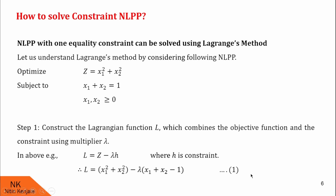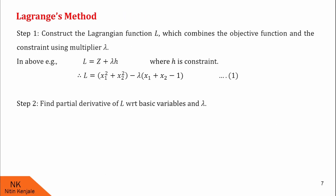Now we proceed to step 2. In step 2, we find the partial derivatives of L with respect to the basic variables x1, x2, and the Lagrangian multiplier lambda — that is, we have to find ∂L/∂x1, ∂L/∂x2, and ∂L/∂λ. Let me show you the calculations of these three derivatives.